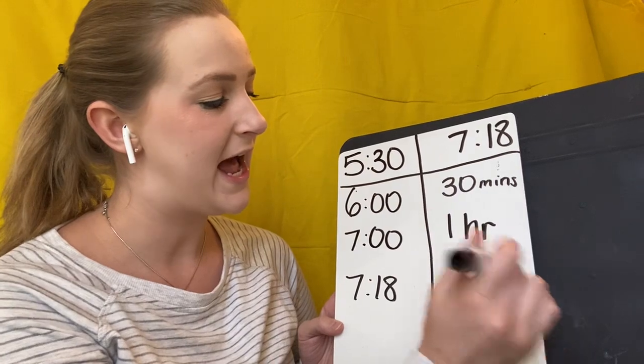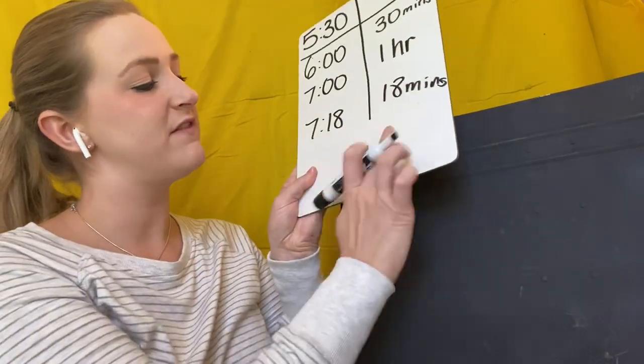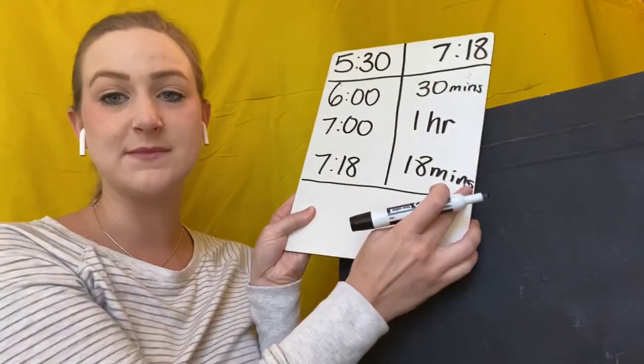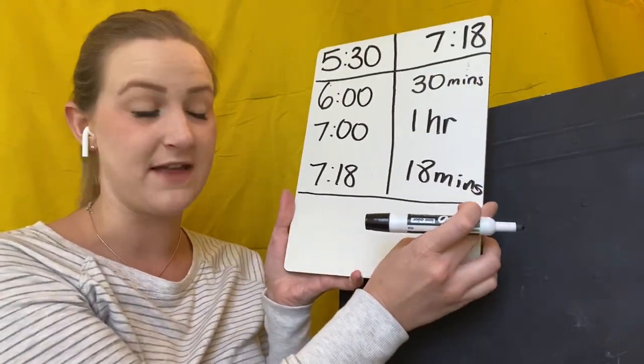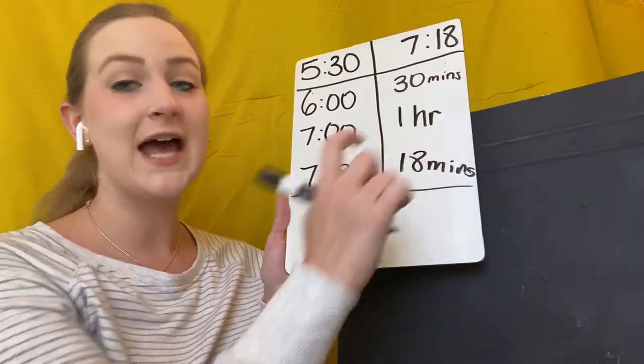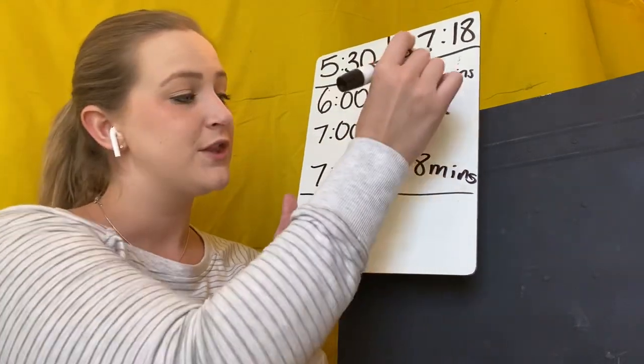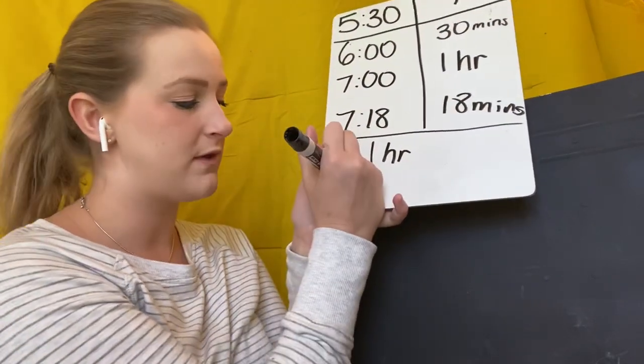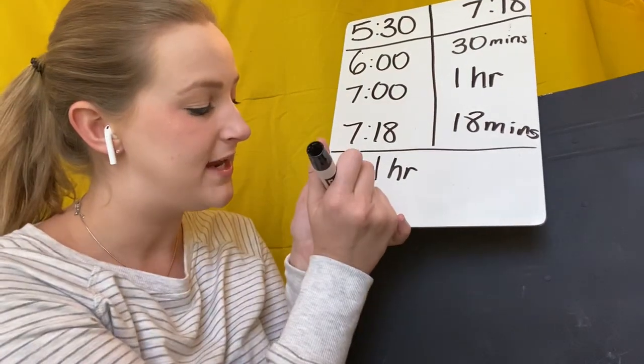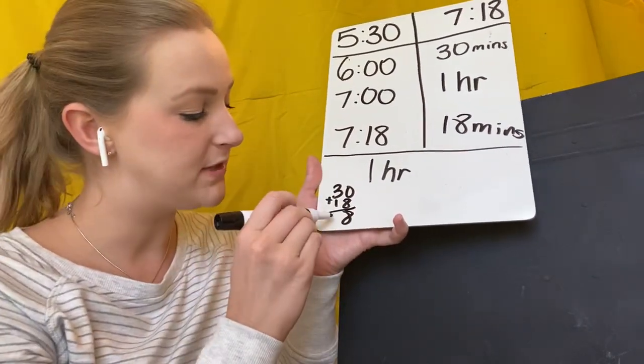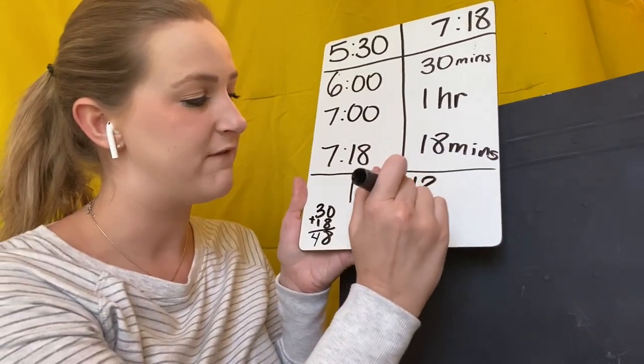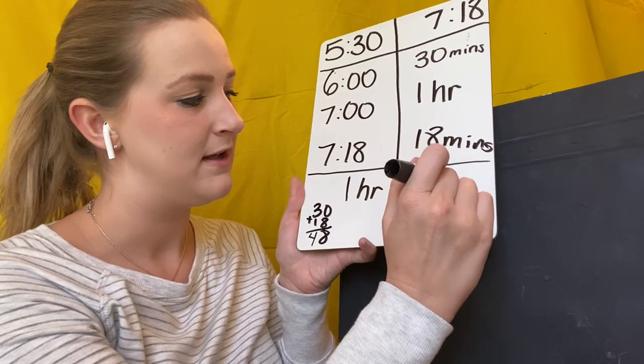Now I know that I had an hour already. So if I'm trying to figure out the total number of time, I have to add up all of these times to figure out how much total time I spent at this restaurant. So I know that I spent an hour there, but now I have to add up my leftover minutes, 30 plus 18. So I'm going to do that over here. 30 plus 18, zero plus eight is eight, three plus one is four. So I spent a total of one hour and 48 minutes.